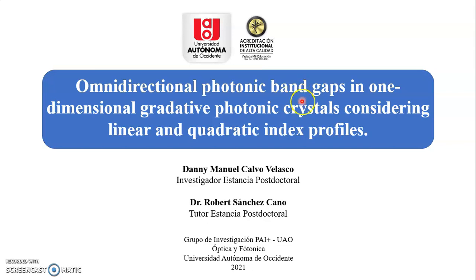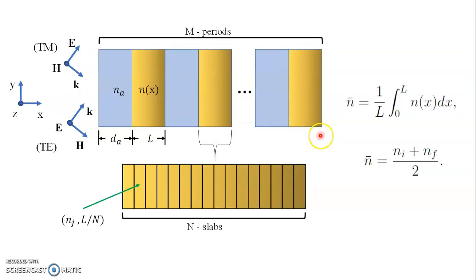We use the transfer matrix formalism for the calculation of the transmittance of the systems. The system is made with dielectric slabs and slabs with gradative index profile that is simulated with the use of a multiple set of dielectric slabs with constant refractive index.